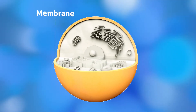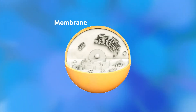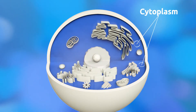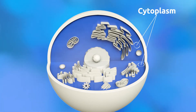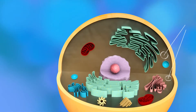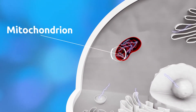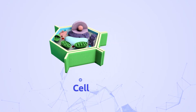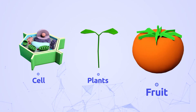The membrane is a layer that surrounds and protects the cell from the outside environment. Its main function is to allow food in and release waste substances. The cytoplasm is a thick solution found inside the membrane where organelles are located. The mitochondrion is the organelle in charge of producing energy in the cell.